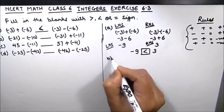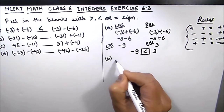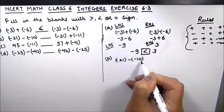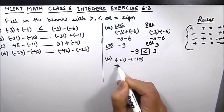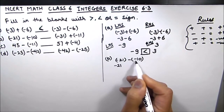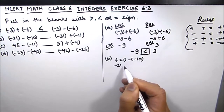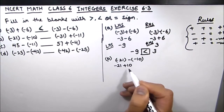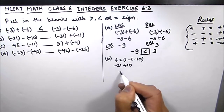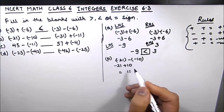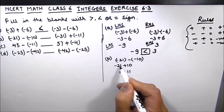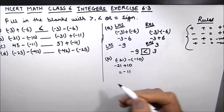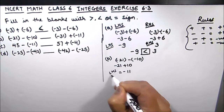Let's solve part B. The left hand side is (-21) - (-10). We write -21 as is. Minus and minus gives us plus, so this becomes -21 + 10. Plus and minus means we subtract the two numbers: 21 minus 10 is 11. The sign will be of the bigger number, which is 21, so the left hand side is -11.